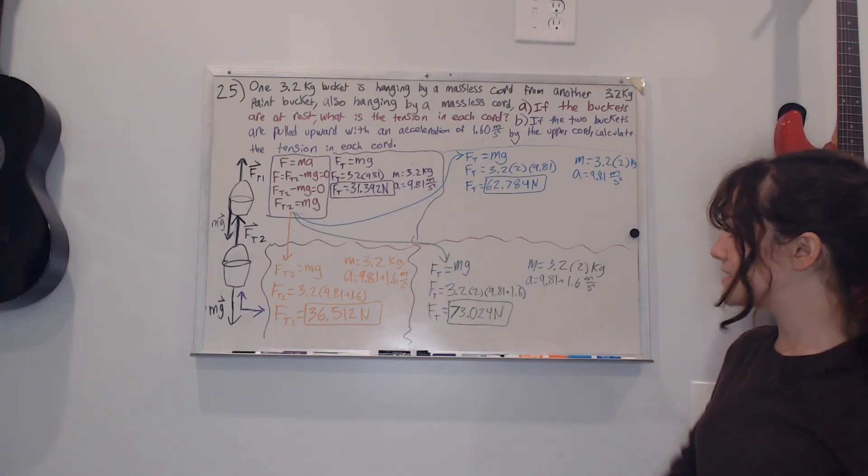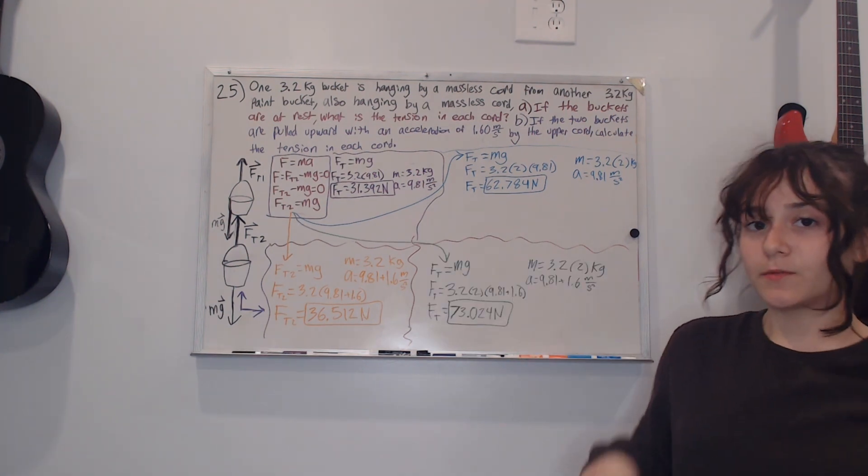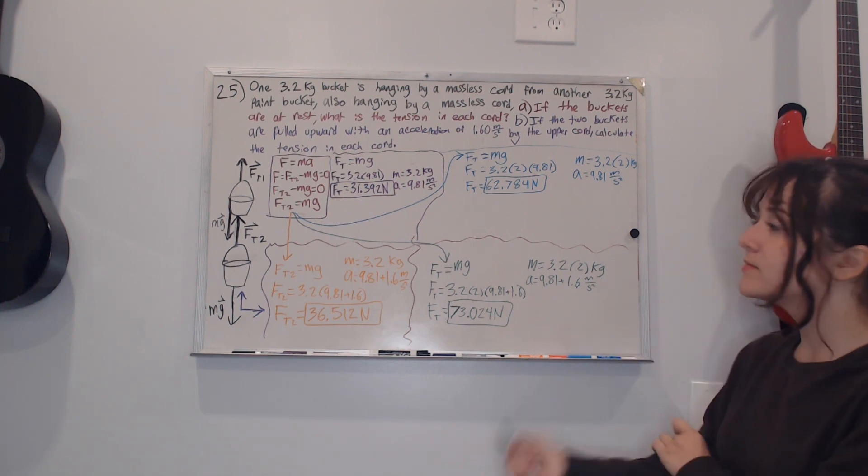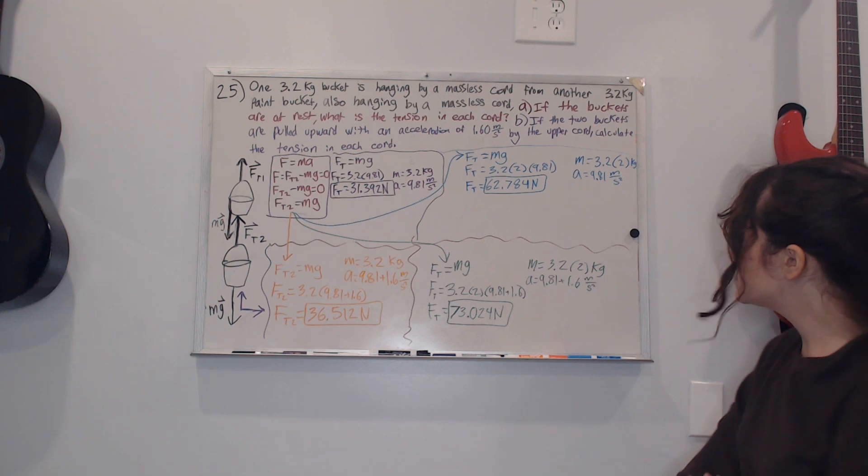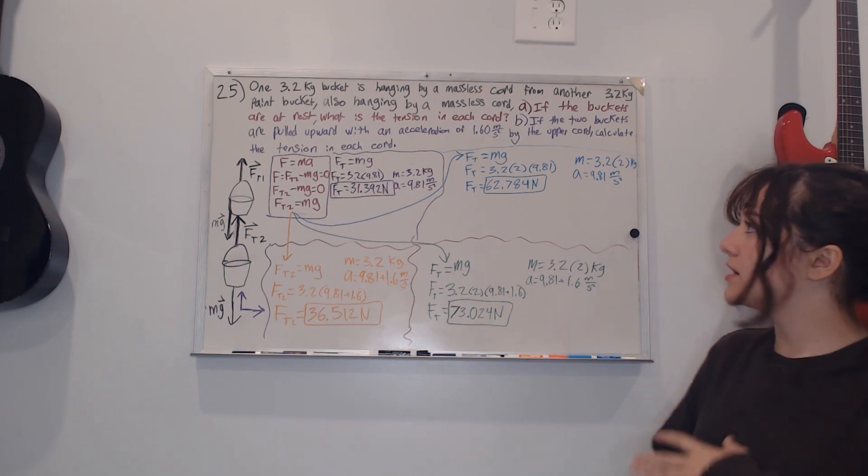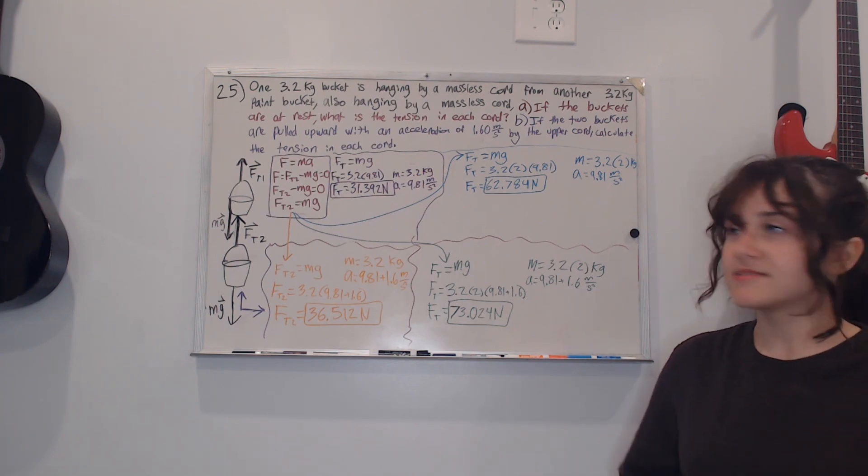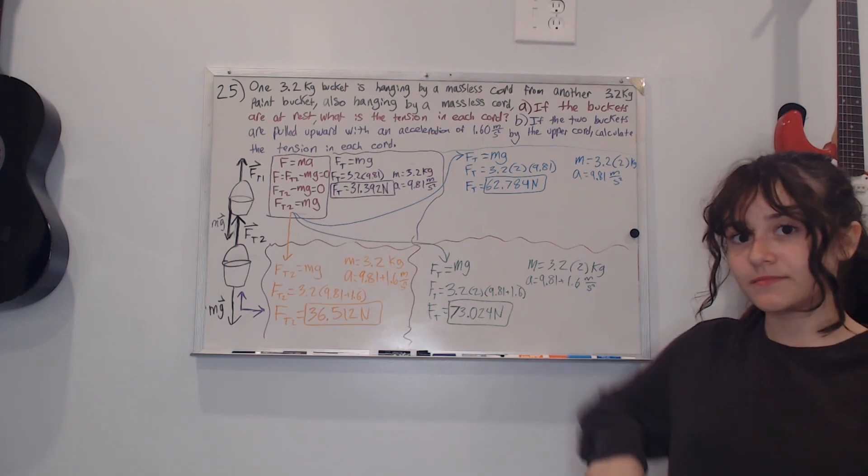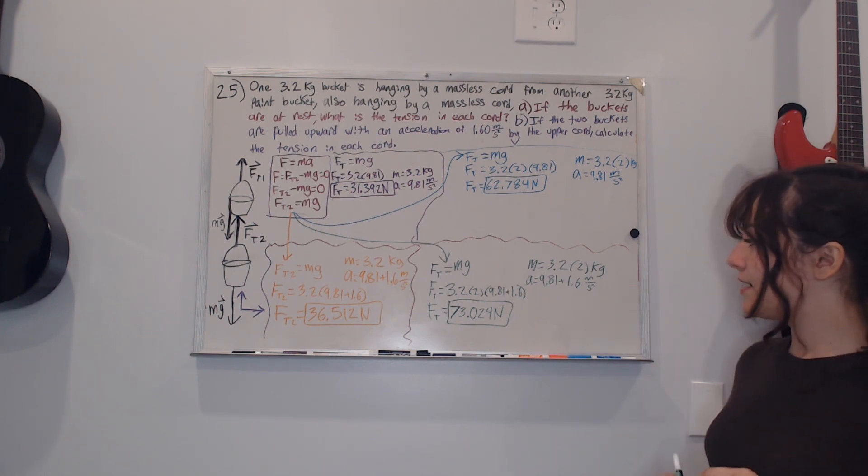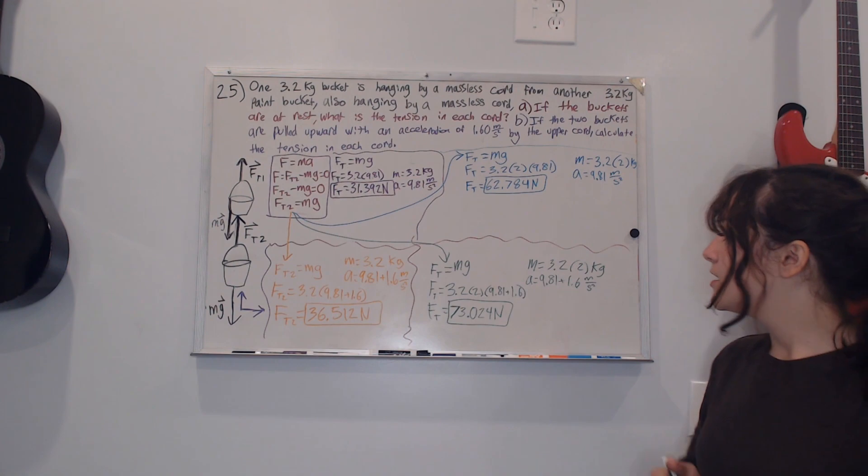Since we're looking for the tension of the rope holding the two buckets, our mass is going to be 3.2 times 2 since it's holding the two buckets, and our acceleration is 9.81 plus 1.6 meters per second squared because the buckets aren't at rest and it's being pulled upwards. After plugging that into the calculator I get my tension with that rope to be 73.024 newtons.